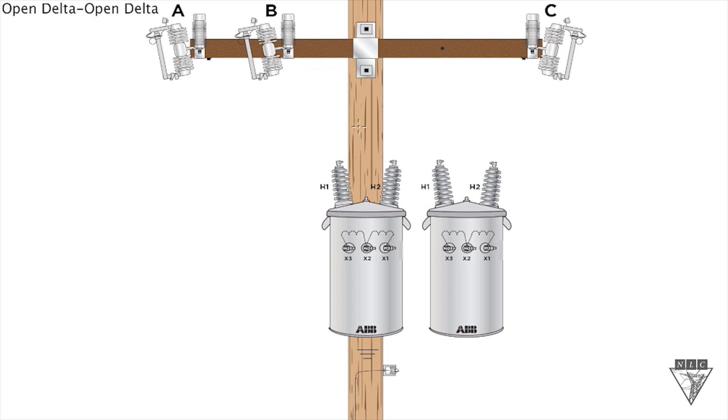Let's start on our primary side. The first thing I like to do is tie our H2 bushing to our H1 bushing. Once we do that, you need to have all three phases on an open delta primary connection.